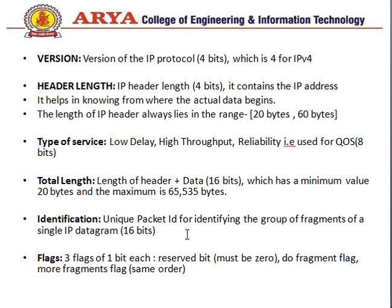Next is identification, which is used for identifying the various fragments. We give each fragment a unique ID so that we can know which part belongs to which data. The identification field is 16 bits.